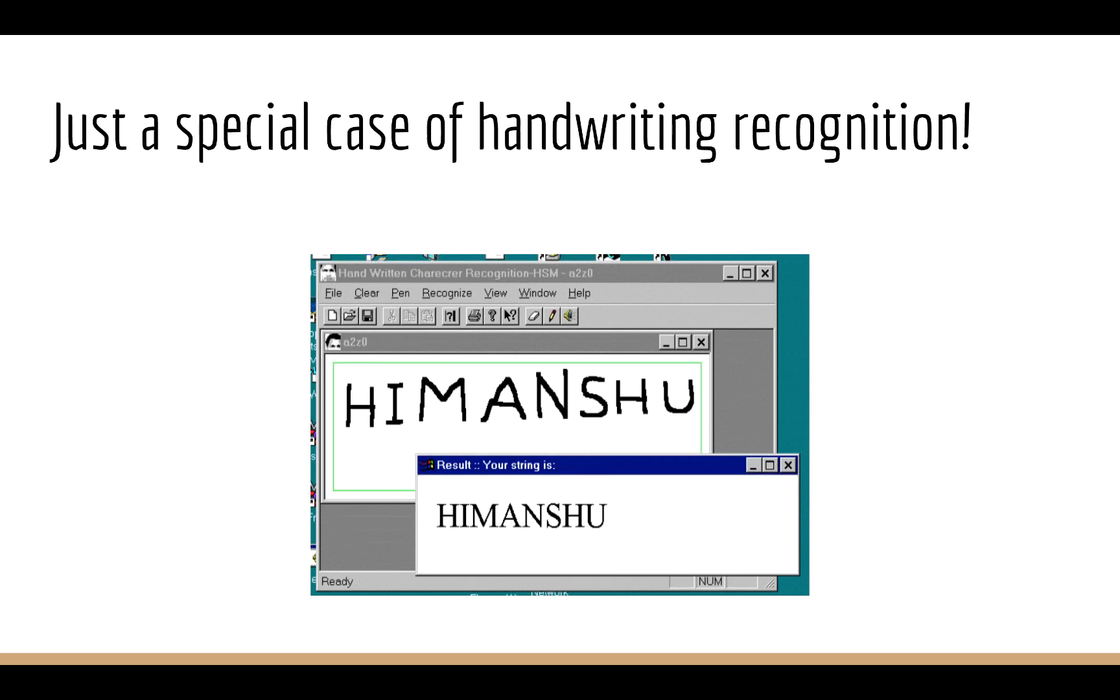Now of course, you may realize that this is just a special case of handwriting recognition. A more general version of this classifier would be able to take in an image of any character, and map that to the corresponding character. So for example, instead of having just 0 to 9, you could also have A to Z. And of course, an immediately useful application of this would be converting handwritten documents into digital form, which is a much more versatile data format than paper.